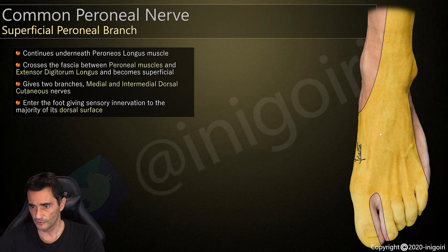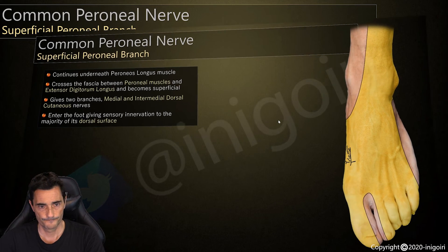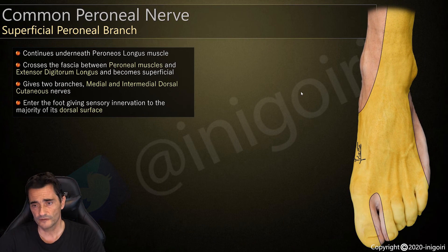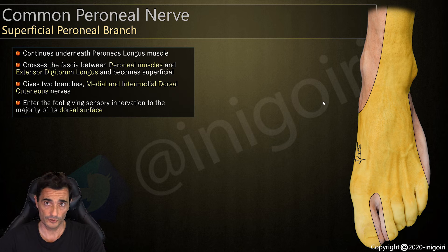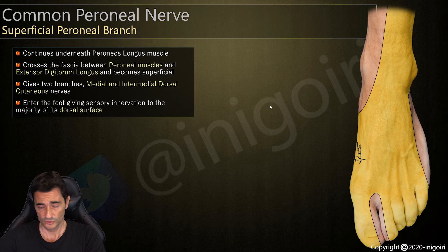The superficial peroneal nerve is responsible for the sensory innervation of the dorsum of the foot — contrasting with the deep peroneal nerve covering the first web space, and the sural nerve covering the lateral aspect. Its motor innervation supplies the peroneus longus and peroneus brevis muscles.